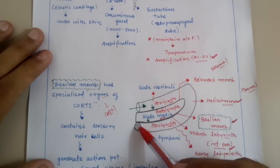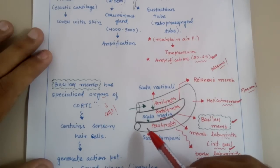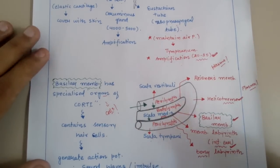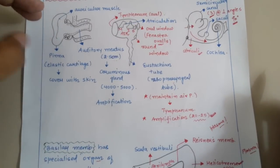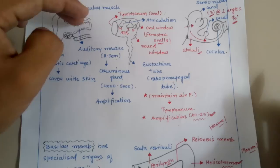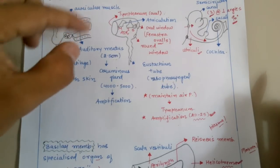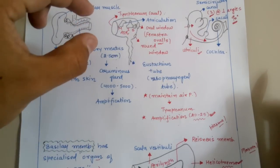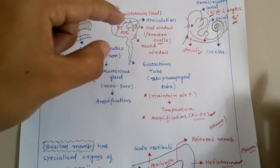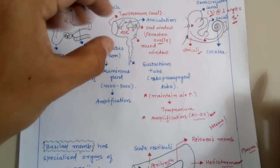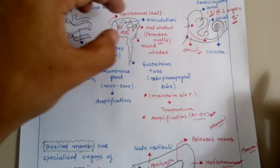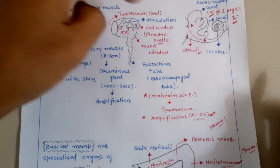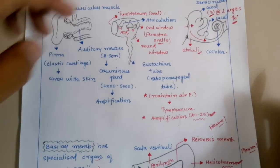Here we have the oval window and the round window, which we already studied in the middle ear and internal ear in the previous lecture. So how does sound come into the ear? Firstly, sound comes via the external ear pinna, travels through the auditory meatus, then crosses the tympanum, and passes via the malleus, the incus, and the stapes. It is amplified by striking these ear ossicles, then comes from the oval window into the internal ear.